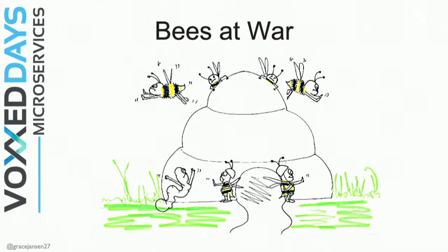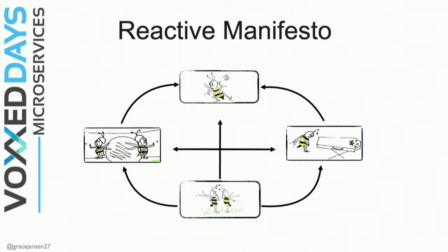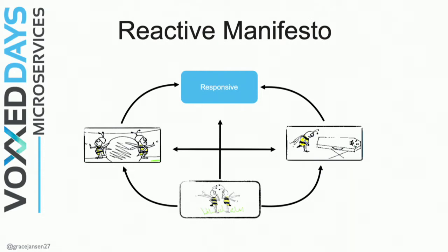How does this relate to software? Each of the behaviors I described maps really well to the different cornerstones of the Reactive Manifesto, which you may have seen in Clément's talk. The first cornerstone is responsive. As I showed with the bees dancing, it's super important that those bees are as responsive as possible — and that's exactly what we want from our applications. I don't want to be a user sitting at my computer clicking away continuously not knowing if anything is happening. It's really important that we create applications that respond to the events that our users are creating.